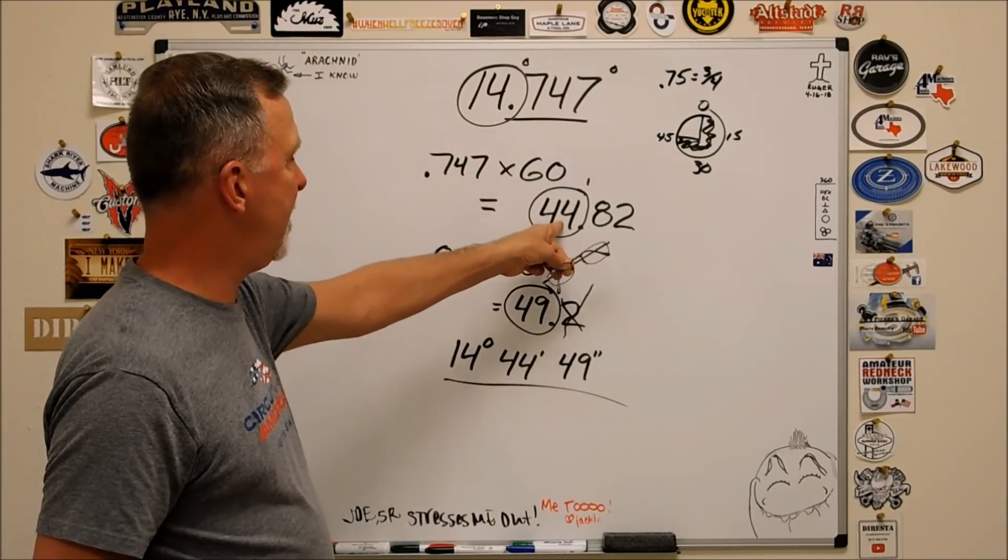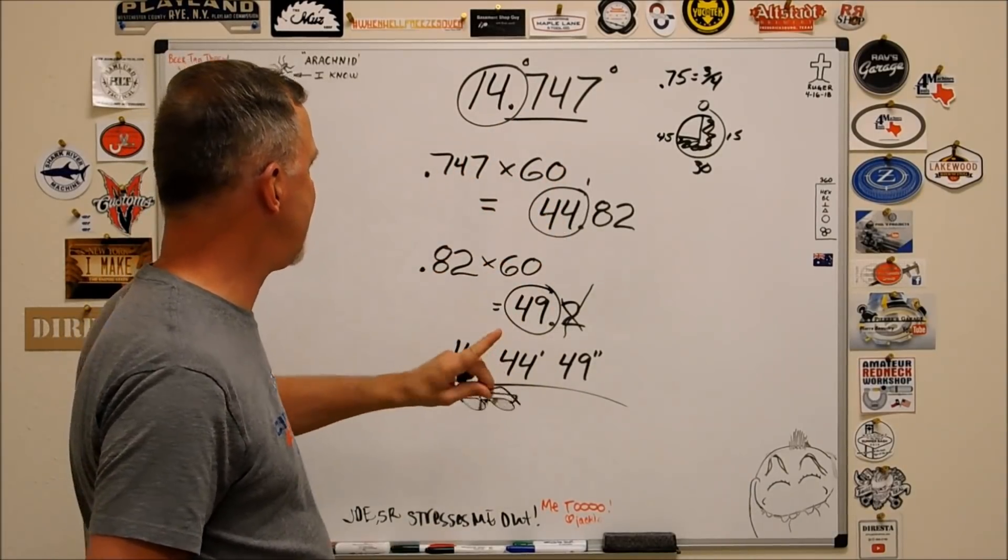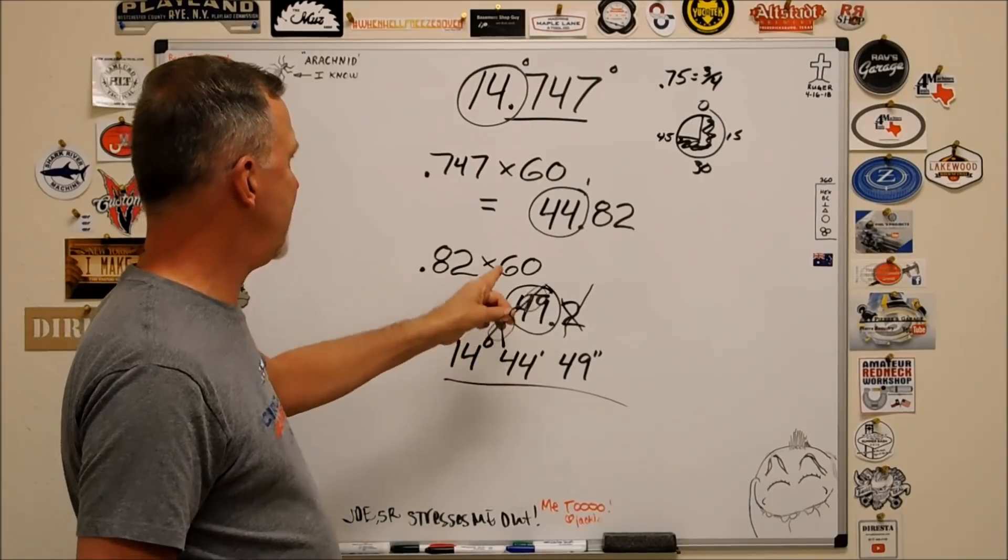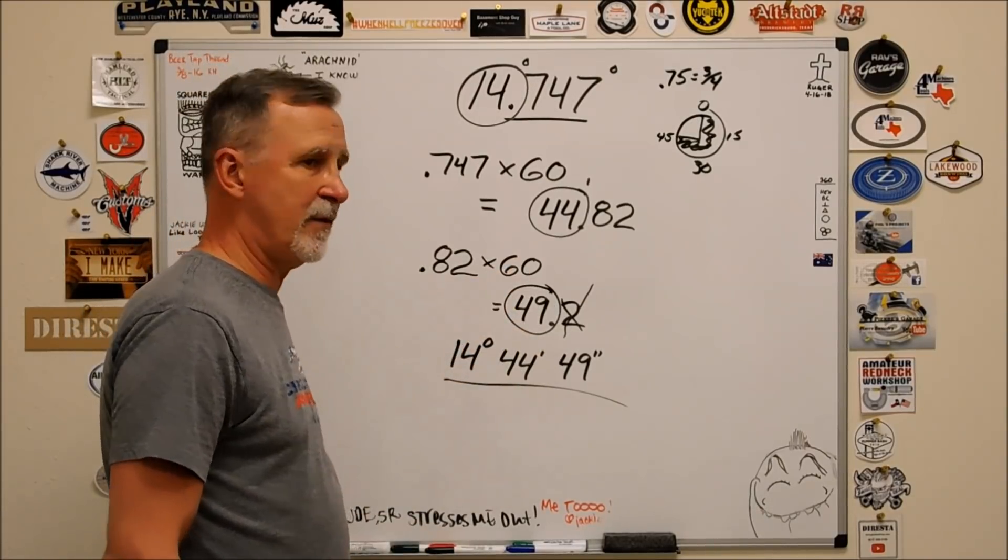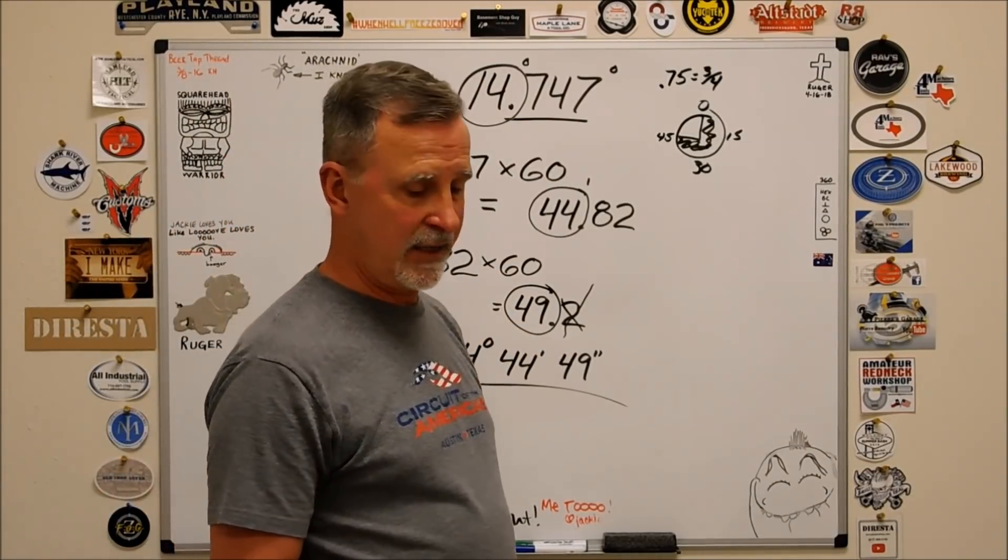Point seven four seven times sixty, take the first whole number, that's your minutes. Point eight two times sixty, take the first whole number, that's your seconds. That's how it breaks out.